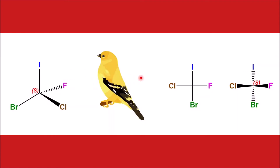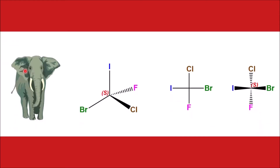Now let us see what would be the interconversion if we look from this side. If we look from this elephant's perspective, you would find that the chlorine atom and fluorine are moving away from this elephant. Chlorine atom would be at the top, fluorine would be at the bottom, iodine would be on its left hand, and bromine atom would be on the right. This is the Fischer projection formula of this same wedge-dash structure from a different perspective, and again if you convert this Fischer projection formula back to wedge-dash formula — where horizontal bonds are coming towards you and vertical bonds going away from you — the RS configuration again is S.